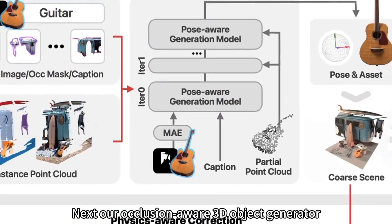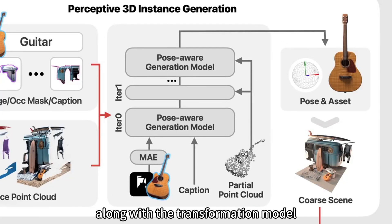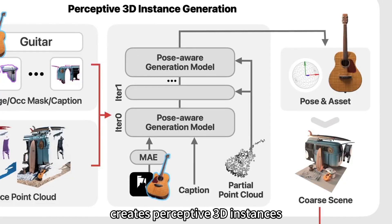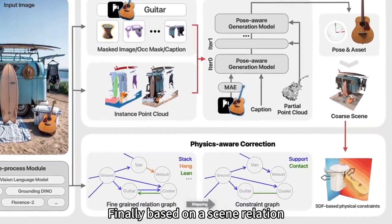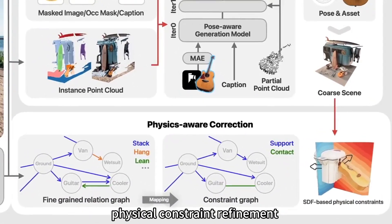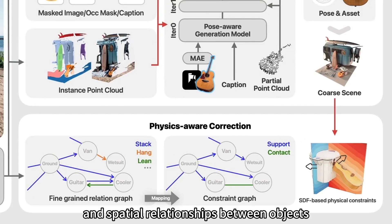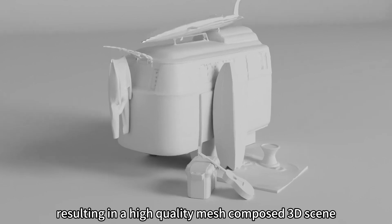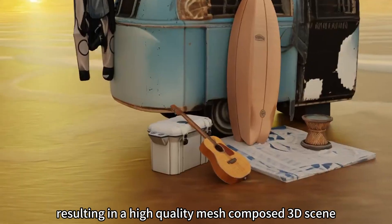Next, our occlusion-aware 3D object generator, along with the transformation model, creates perceptive 3D instances. Finally, based on scene relations, physical constraint refinement ensures realistic interactions and spatial relationships between objects, resulting in a high-quality mesh-composed 3D scene.